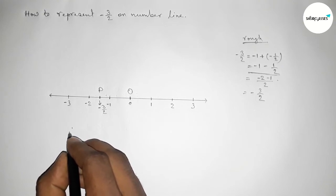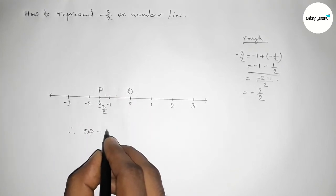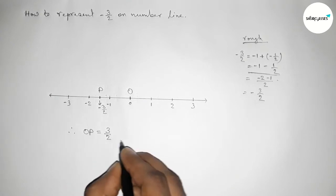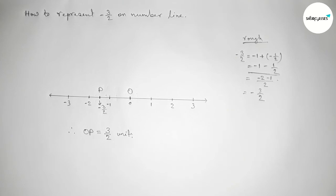So therefore distance OP equals to we can write three by two unit, since we know that distance is always positive. So that's all, thanks for watching. If this video is helpful to you, then please share it with your friends.